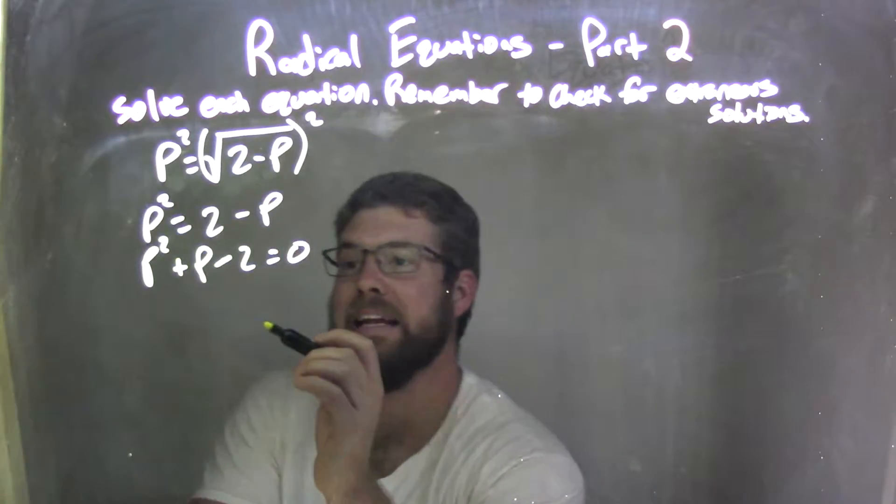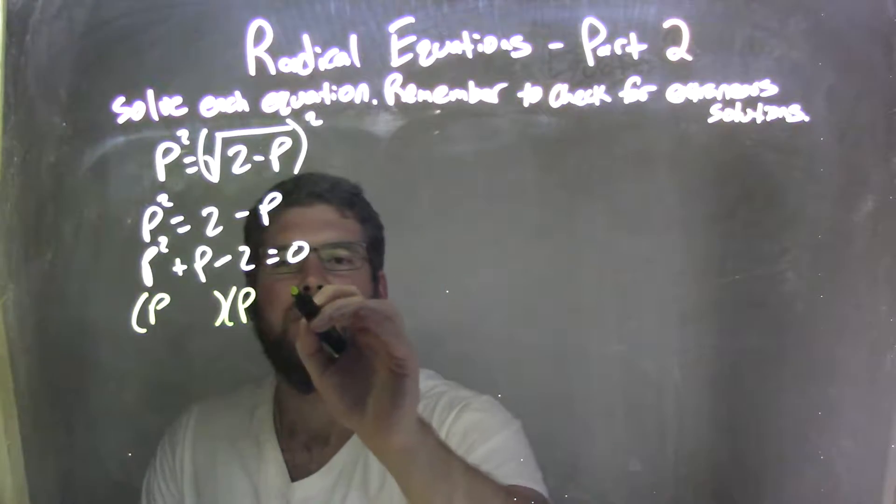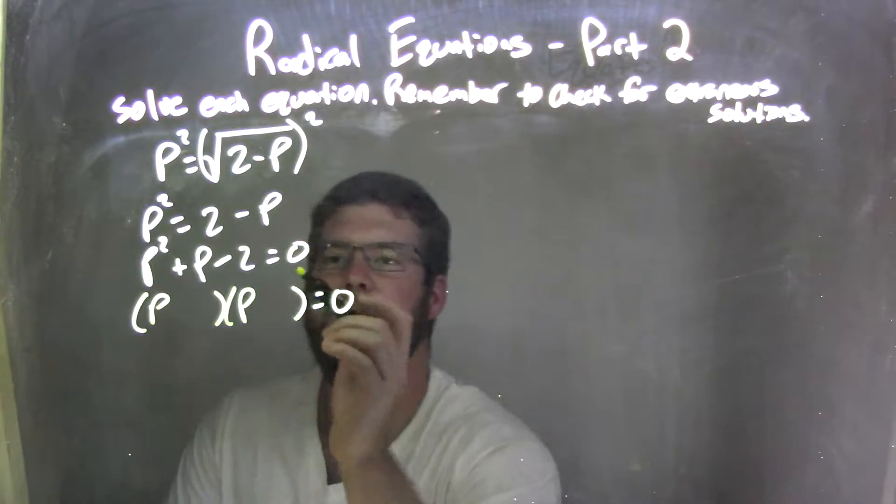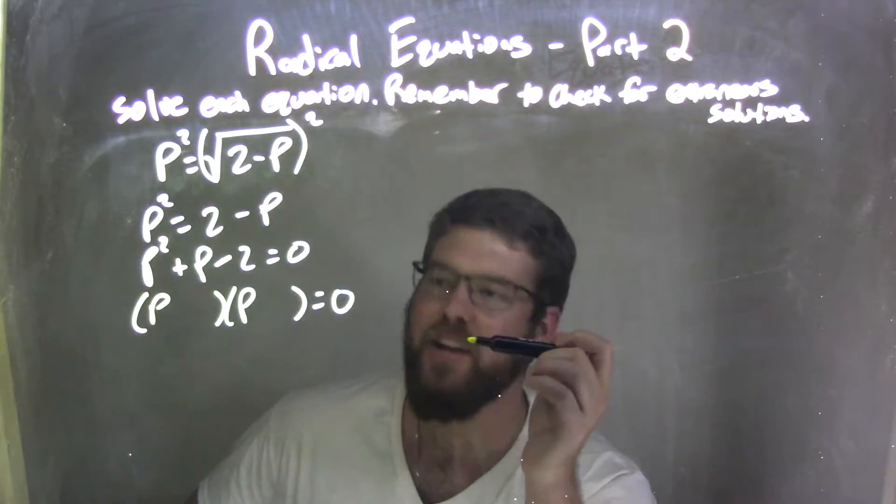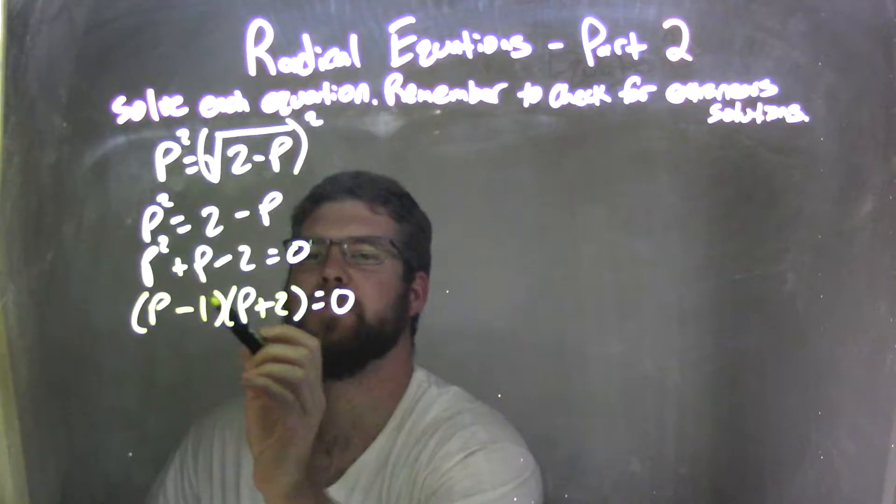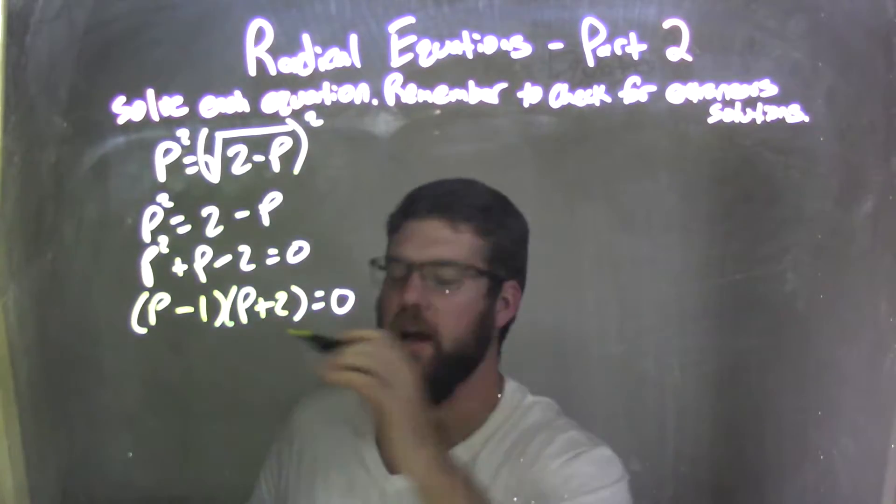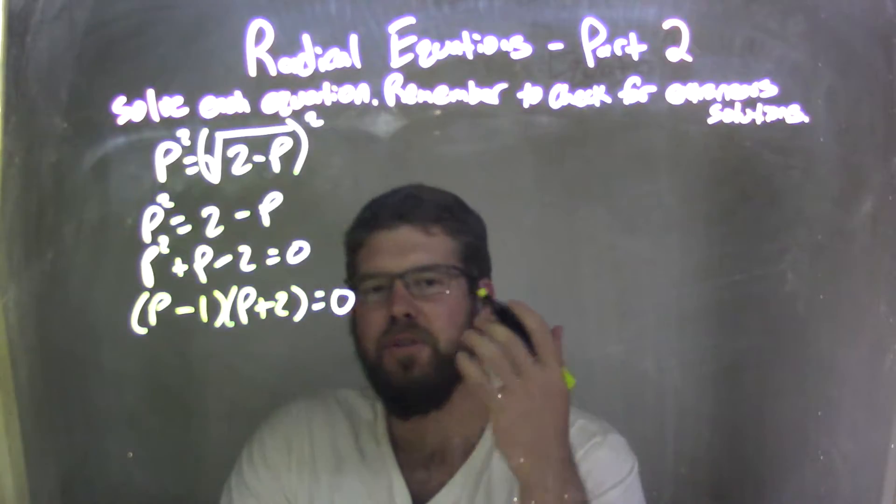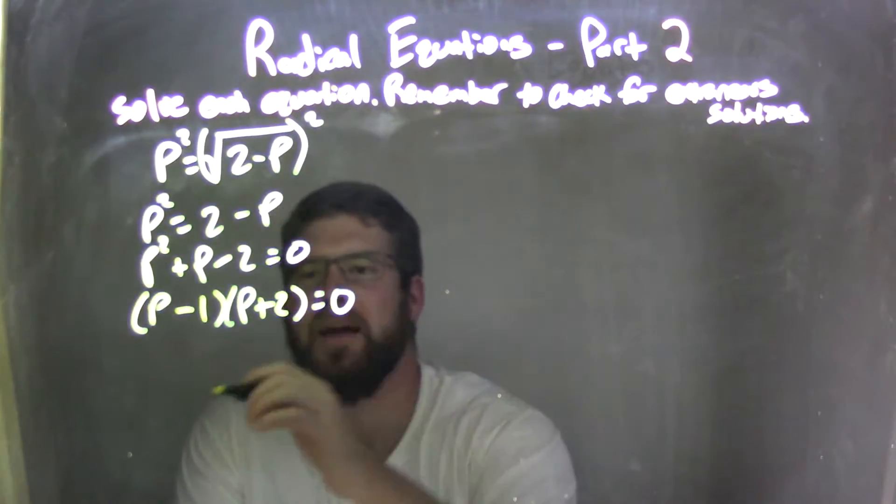Then from here, I need to factor. I'm factoring this. What two numbers multiply to be negative 2 but add to be 1? And that is a negative 1 and a positive 2. What two numbers multiply to be negative 2 but add to be 1? Now if you have trouble with factoring, there's other videos to help you with factoring, but here I'm kind of just jumping ahead.